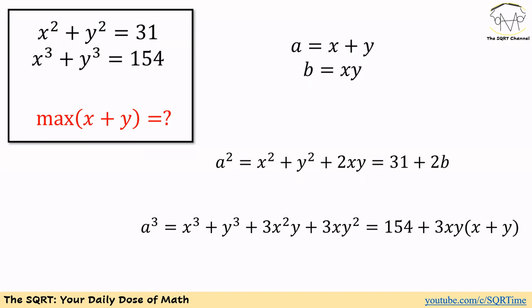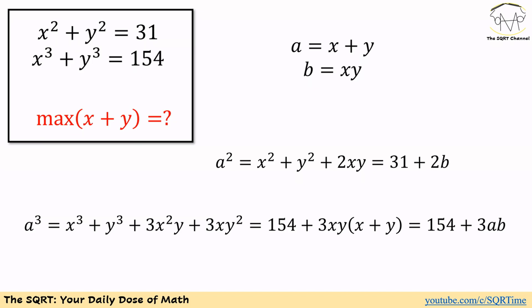Now we have a squared equals x squared plus y squared plus 2 times xy. We are going to write it as 31 plus 2 times b. On the other hand, for a cubed we are going to write it as 154 plus 3 times xy times x plus y, and for x plus y we use a and for xy we use b. So at the end we have a cubed equals 154 plus 3ab.